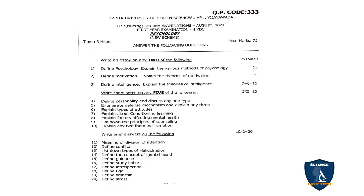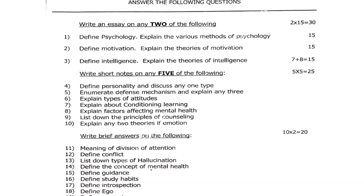Next is Psychology, question paper code 333, August 2021 — 75 marks total. In the essay section, there are three questions; answer any two — 2 × 15 = 30 marks. First question: define psychology and explain the various methods of psychology. Second question: define motivation and explain the theories of motivation. Third question: define intelligence and explain the theories of intelligence.